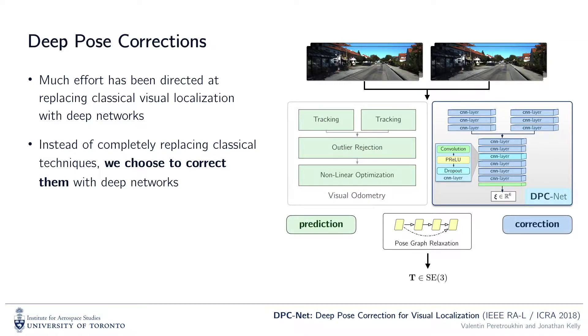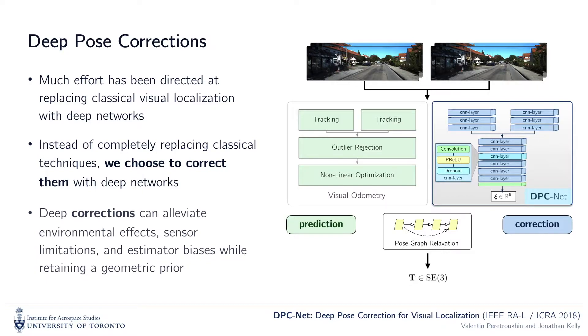Our deep corrector, called DPCnet, learns pose residuals that can account for sensor miscalibrations, estimator biases, and systematic environmental effects that degrade localization.